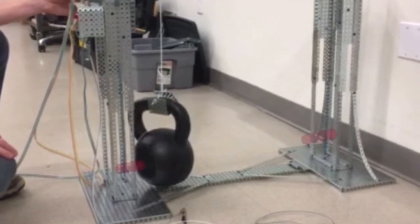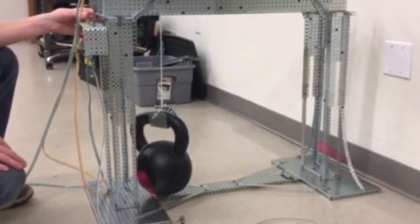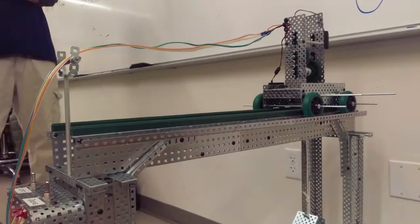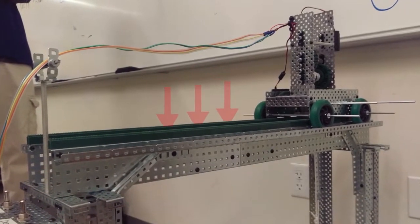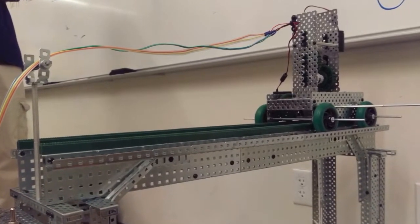We started with the construction of our stanchions. We used a wide foot for stability and built up from there. The bridge is designed to be narrow but tall. Since most of the weight on it will be in the vertical direction, this design provides us with a lot of rigidity.